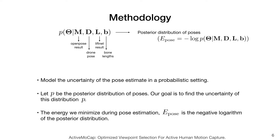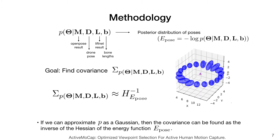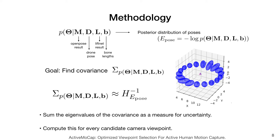Our key idea is to model the uncertainty of the pose estimation in a probabilistic setting. Let p be the posterior distribution of poses. Our goal is to find the uncertainty of this distribution p. We know that the energy we minimize during pose estimation, E pose, corresponds to the negative logarithm of p. If we can approximate p as a Gaussian, then the covariance can be found as the inverse of the Hessian of the energy function E pose. We sum the eigenvalues of the covariance as a measure for uncertainty. This value is computed for every candidate viewpoint.